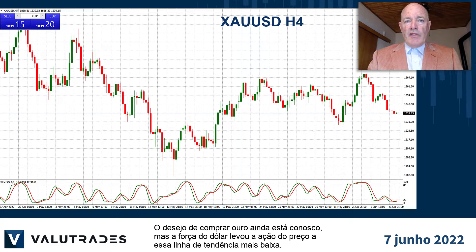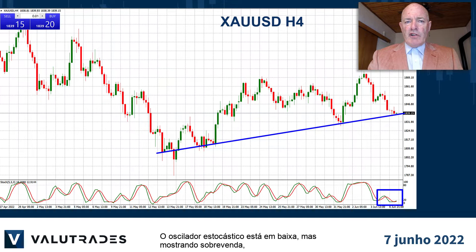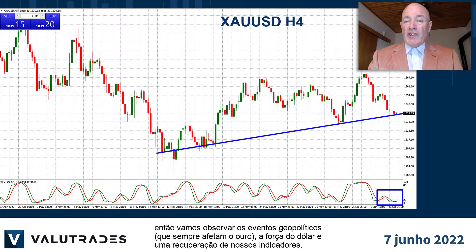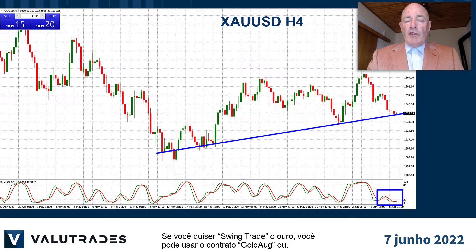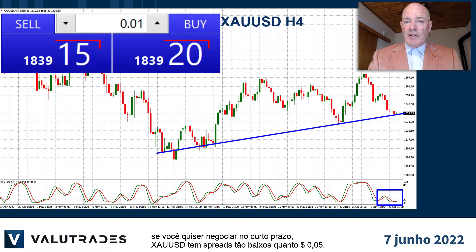The desire to buy gold is still with us but the strength of the US dollar has driven price action down to this lower trend line. The stochastic oscillator is bearish but showing oversold, so we will watch geopolitical events which always affect gold, the strength of the US dollar, and an upturn of our indicators. If you want to swing trade gold you may use the Gold August contract, or if you want to trade on the shorter term, XAUUSD has spreads as low as 5 cents.